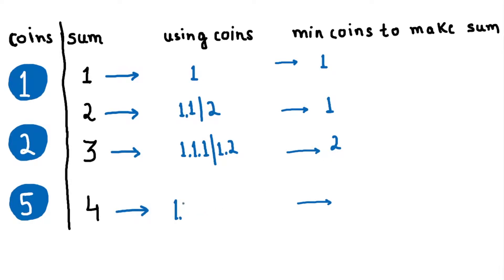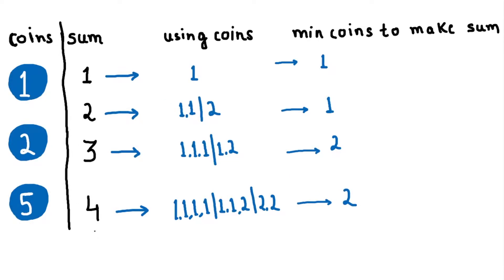For sum 4, we can use coin 1 four times, or coin 1 twice and coin 2 once, or coin 2 twice. So the minimum coins to make sum 4 is 2. We can go on to find the minimum coins for any sum this way.